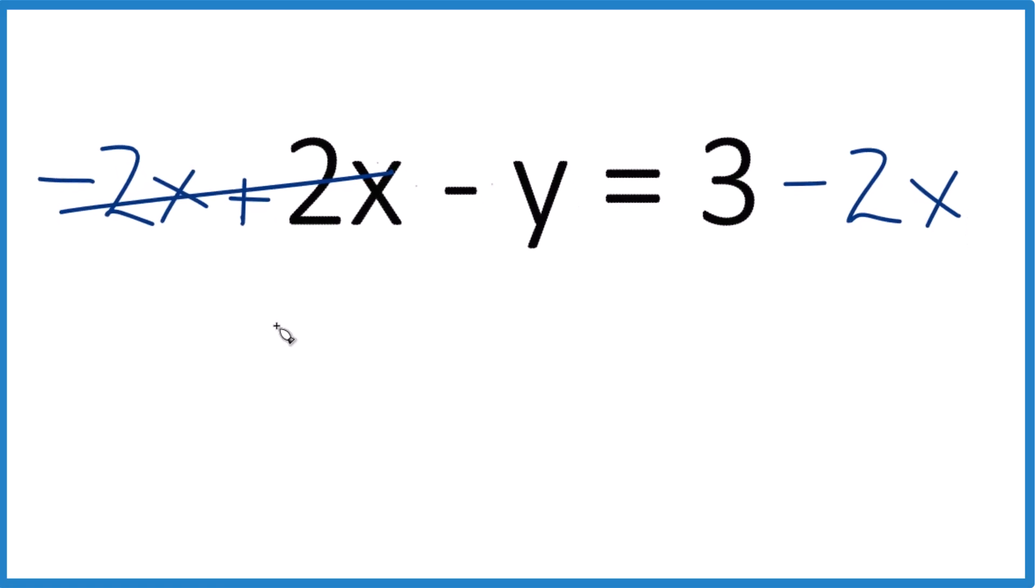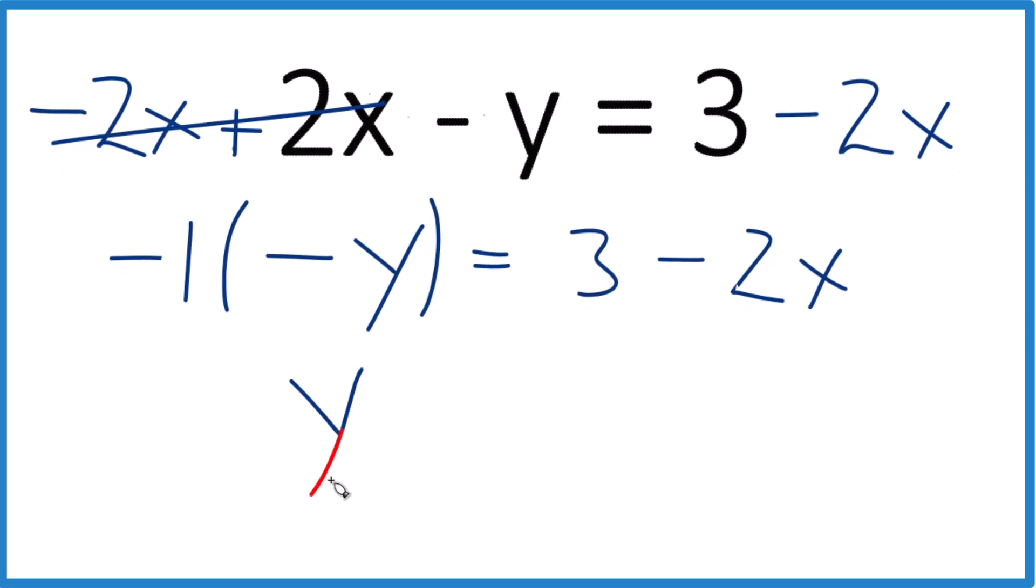Let me write it again down here. If I multiply this whole thing by a negative—say negative 1 times this—that would end up with y, and y would be by itself. Over here though, I've got to multiply everything by negative 1.